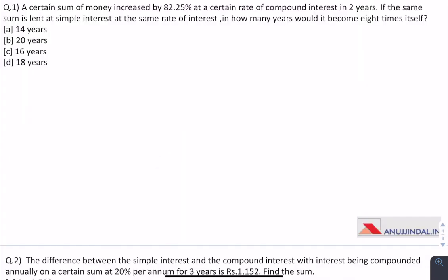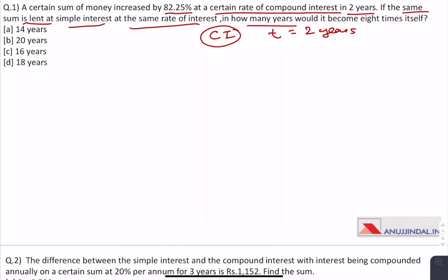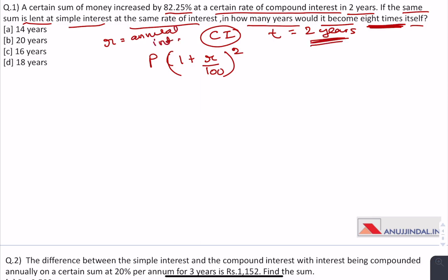Question 1: A certain sum of money increased by 82.25% at a certain rate of compound interest in 2 years (compounded annually). If the same sum is lent at simple interest at the same rate, in how many years would it become 8 times itself? We write the equation: P × (1 + R/100)² = 1.8225P. The P cancels, leaving (1 + R/100)² = 1.8225.